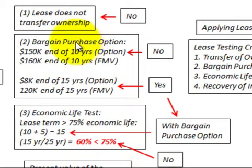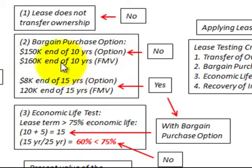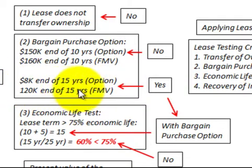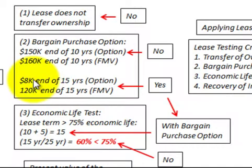For the second test — the bargain purchase option — at the end of 10 years, you can buy the asset for $150,000, but the fair market value is $160,000, so it's unlikely the lessee will exercise that option. However, at the end of 15 years, the option price is $8,000 while the fair market value is $120,000, so it is likely the lessee will use the bargain purchase option and purchase the asset for $8,000. It passes the bargain purchase option test.